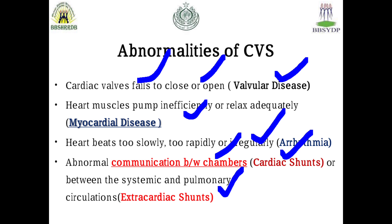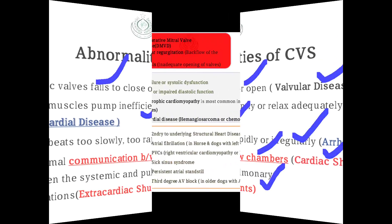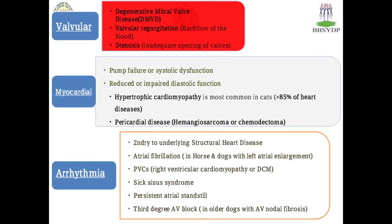Common cardiovascular disorders found in pets including dogs and cats include valvular diseases such as degenerative mitral valve disease, commonly abbreviated as DMVD, valvular regurgitation or backflow of the heart due to inadequate closing of the mitral valves, and stenosis, which may be due to inflammation of the mitral valves causing inadequate opening of the valves. This is an overview to help understand the common problems we can diagnose.